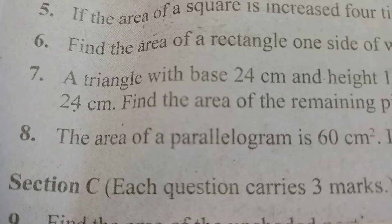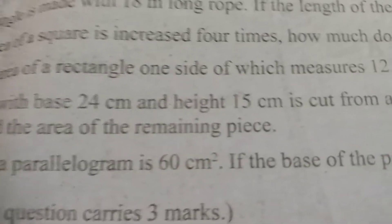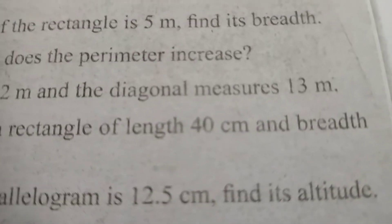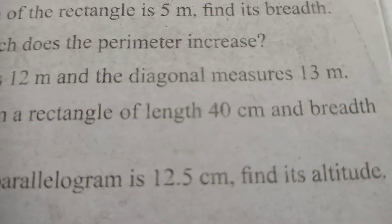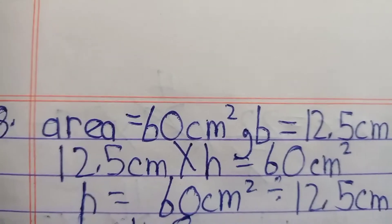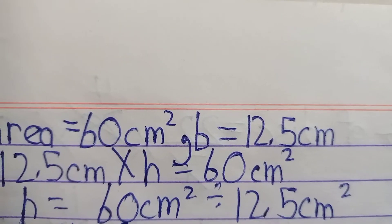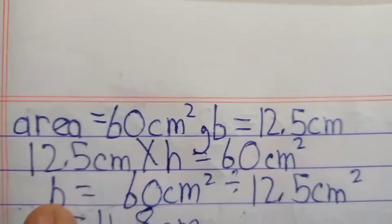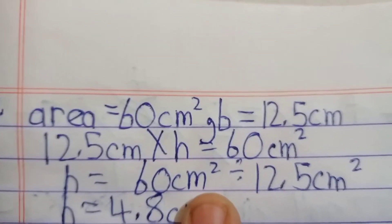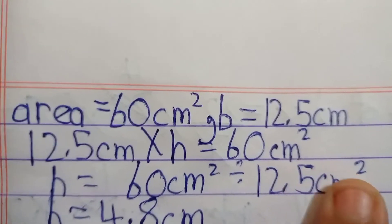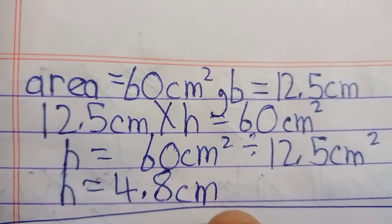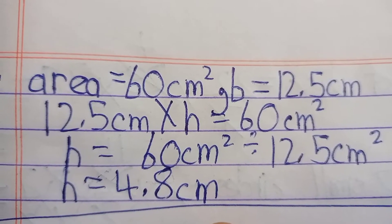Question eight: the area of a parallelogram is 60 cm square and the base is 12.5 cm. Find the altitude. Using the formula: area equals base multiplied by height, so 60 equals 12.5 multiplied by height, giving height equals 60 divided by 12.5 which is 4.8 cm.